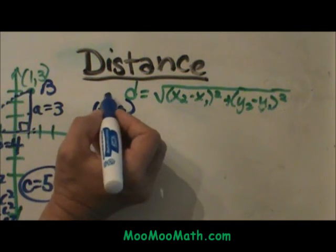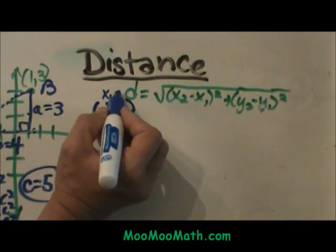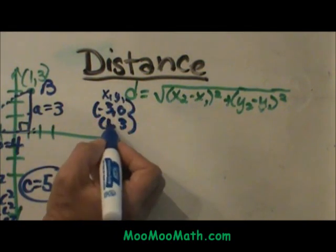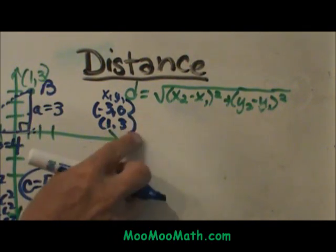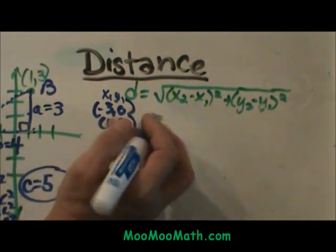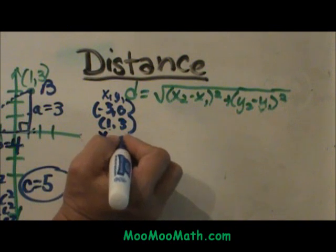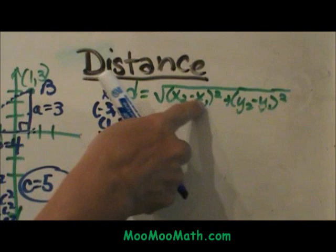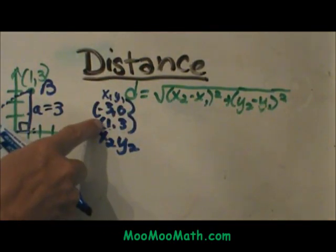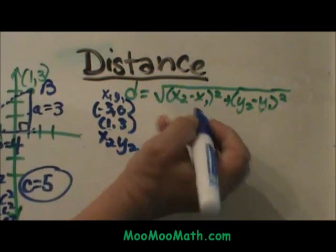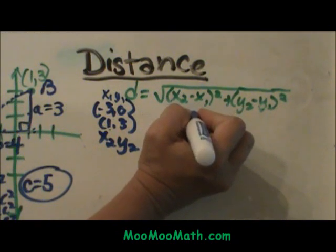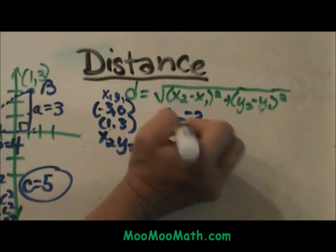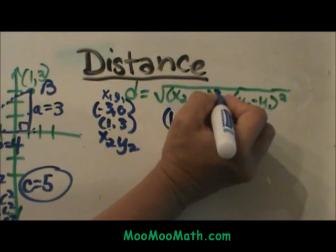So negative three zero I am going to label that x1y1. One three I am going to label x2y2 and I am going to plug into my formula. So I am going to take x2 minus x1. So I am going to take one minus negative three, quantity, and notice this is squared.